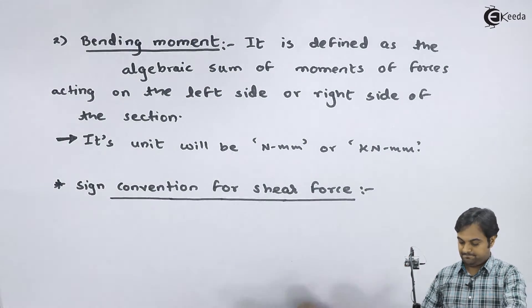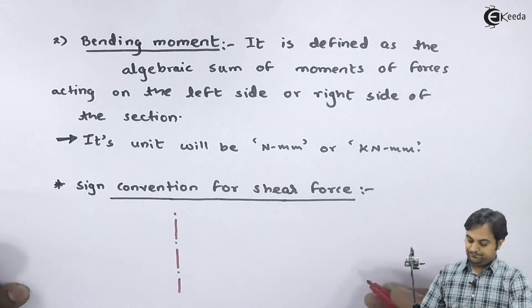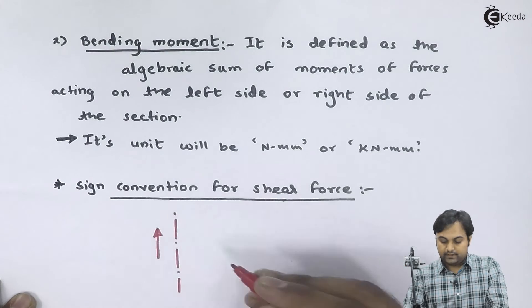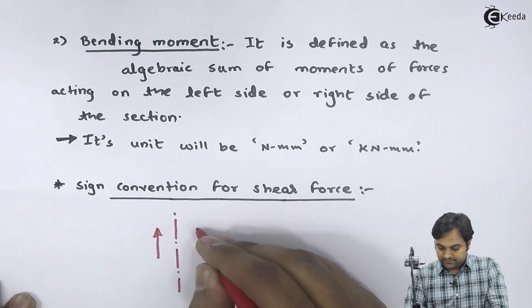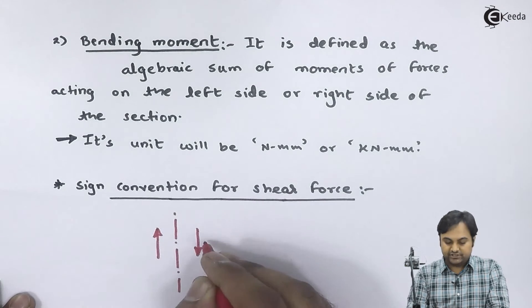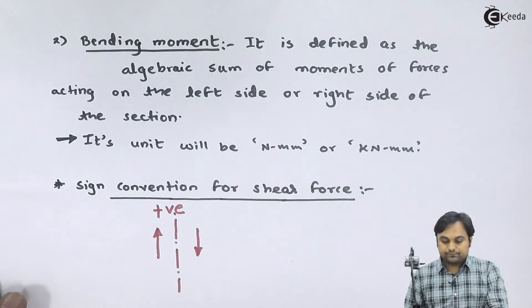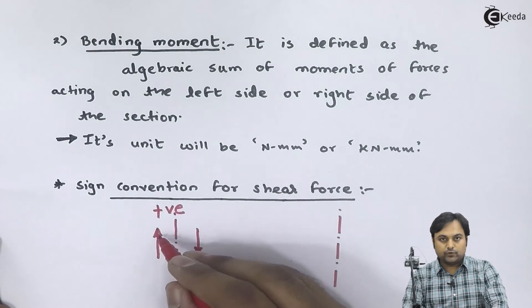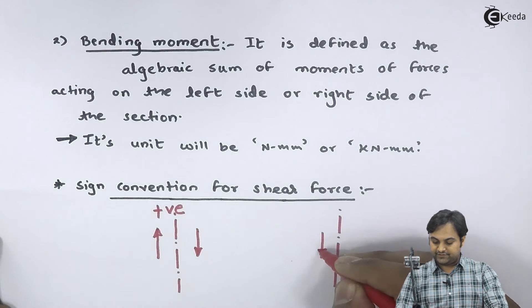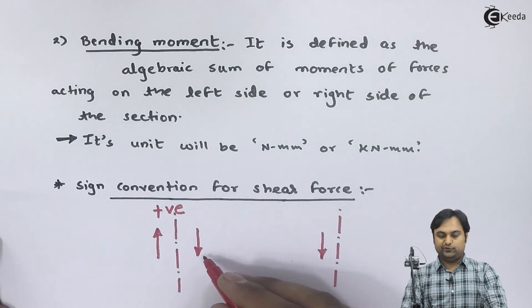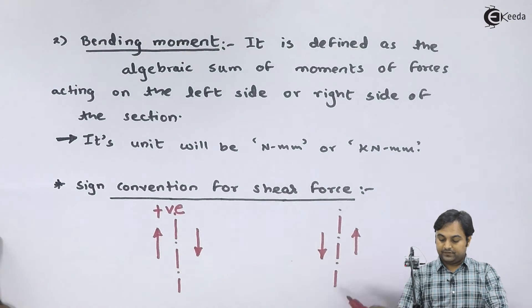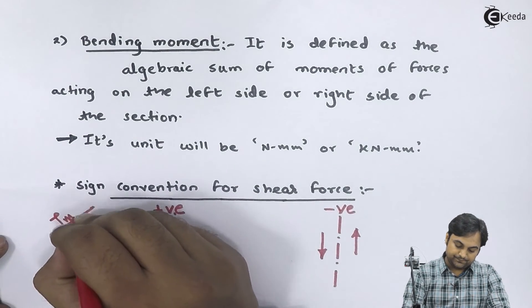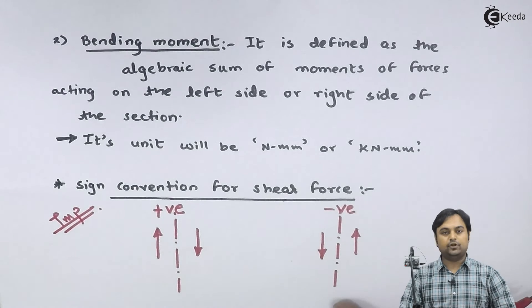If I take a section on a beam: if there is an upward force to the left of the section and a downward force to the right of the section, both these forces are taken as positive. Similarly, if there is a downward force to the left of the section and an upward force to the right of the section, both these forces are taken as negative. These sign conventions are very important for solving any problems on Shear Force and Bending Moment.